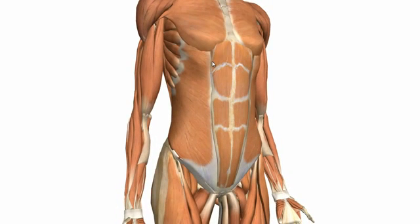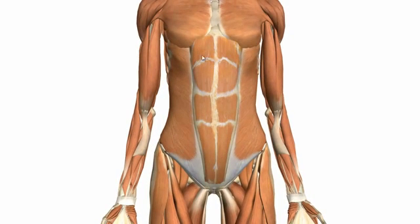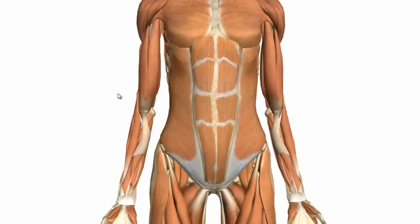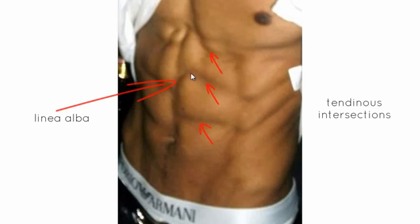There is another white line on the edge of the rectus abdominis on either side called the linea semilunaris. You can also see horizontal intersections that separate the muscle bellies of the rectus abdominis — these are called tendinous intersections, and they can be seen on people who have low body fat and a lot of muscle mass. In the surface anatomy picture you can see the linea alba down the midline and visualize the tendinous intersections between the muscle bellies.